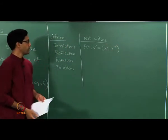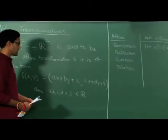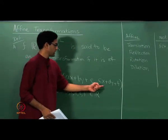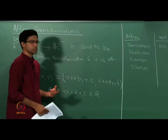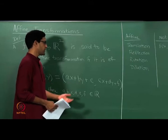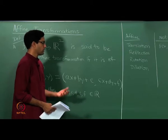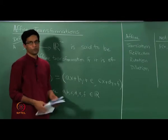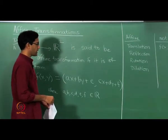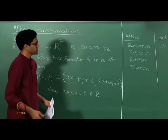For example, f of (x, y) = (x², y²) is not affine. An affine transformation can also be described as a map in which both components are linear polynomials in x and y — meaning polynomials of degree at most 1. There are no x², xy, y², or higher powers involved in either term. So a quadratic function like f(x,y) = (x², y²) would not be an affine transformation.